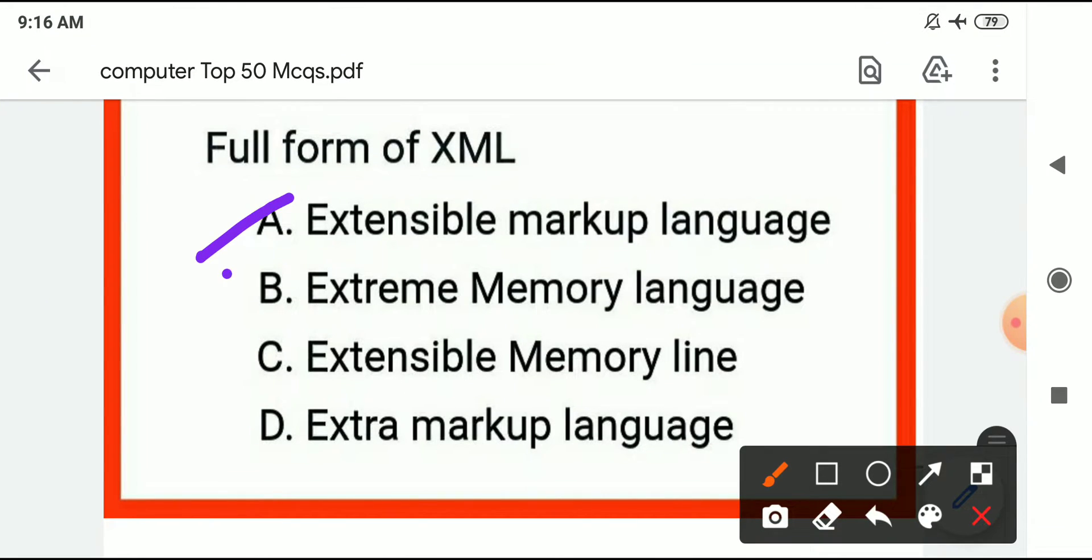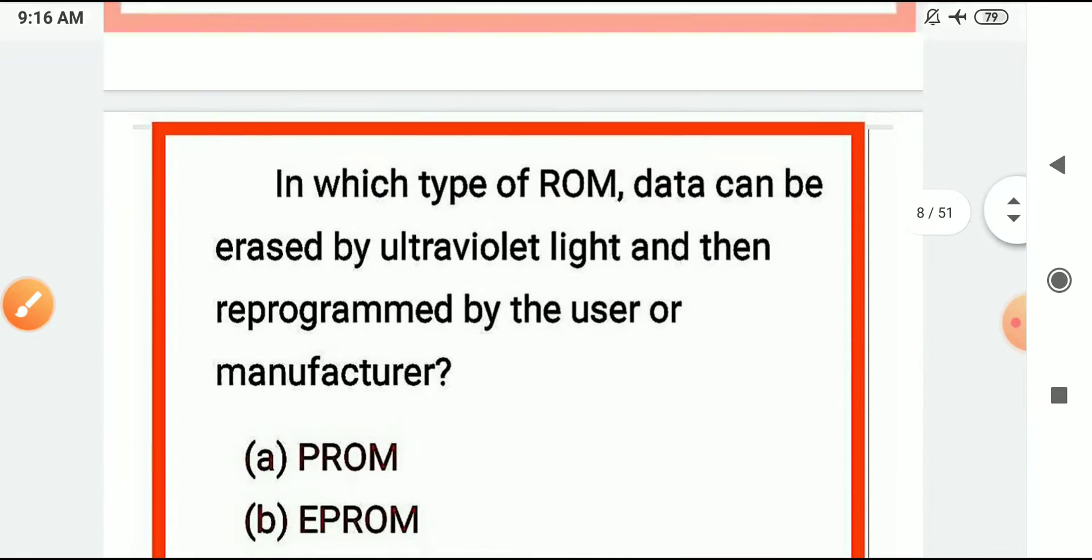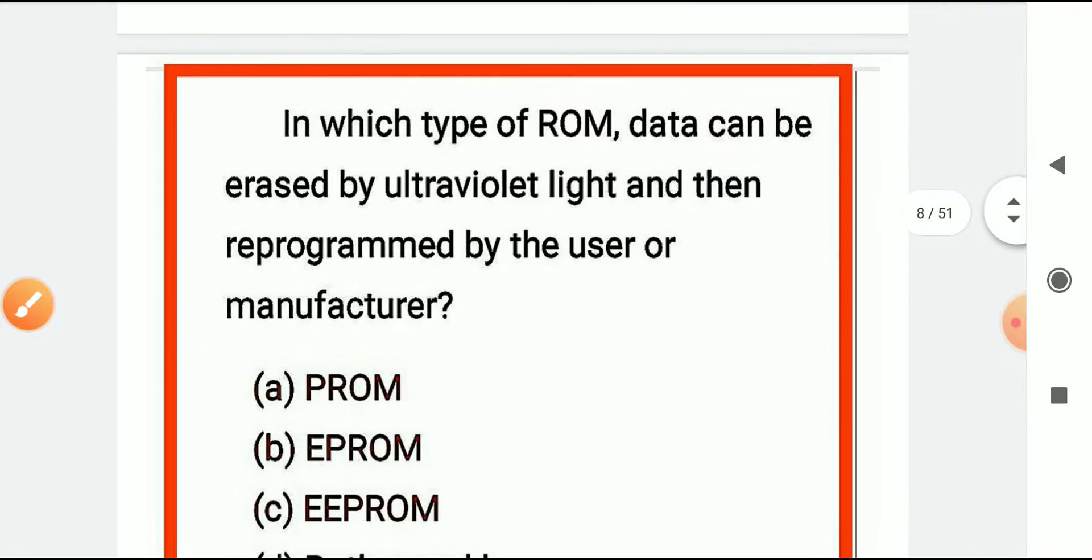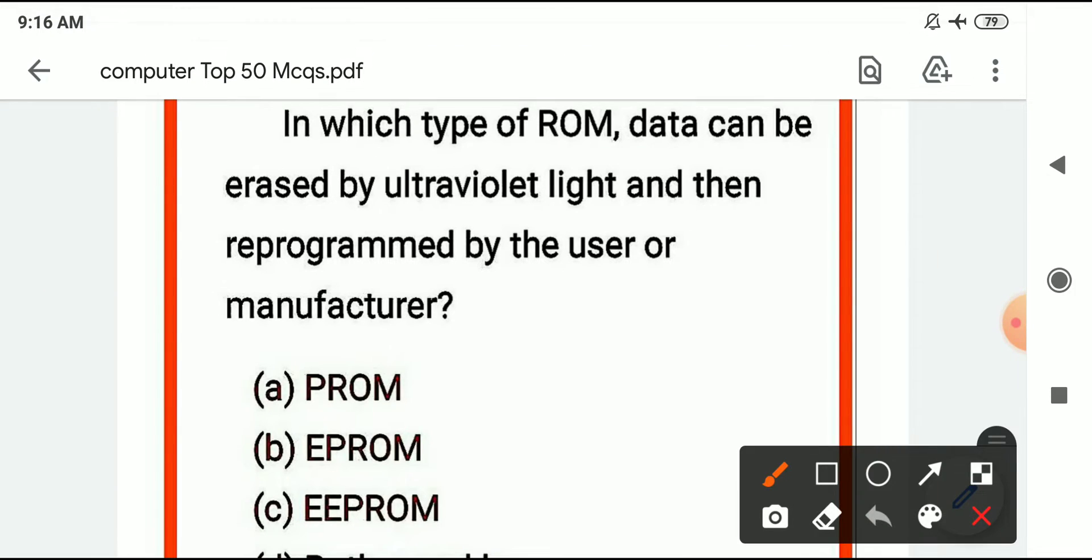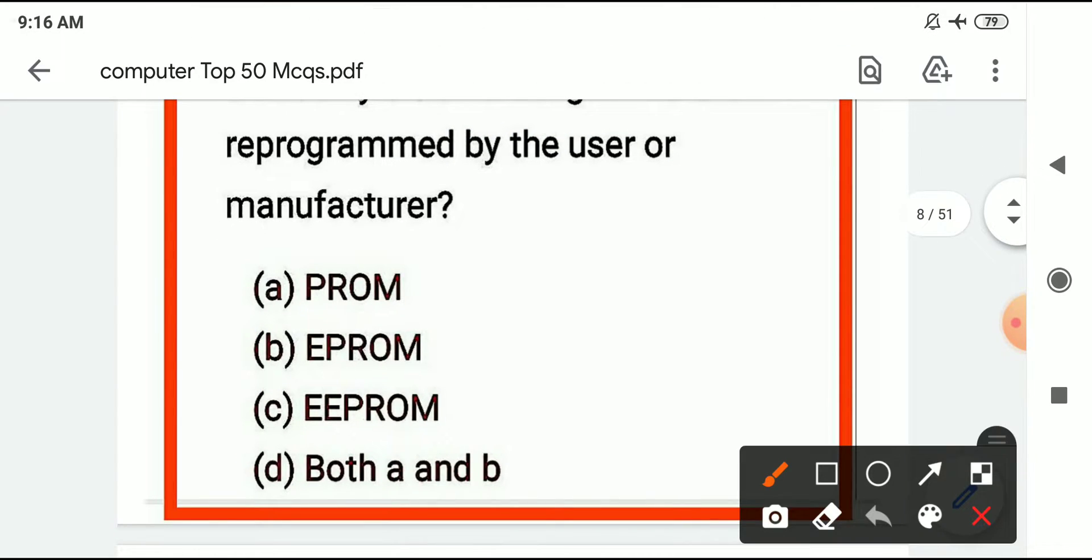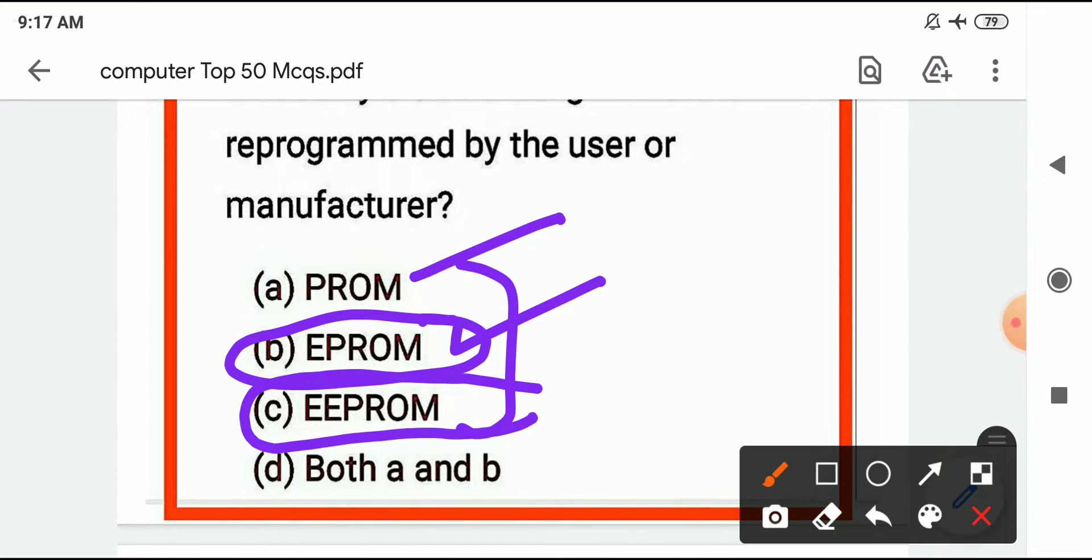Full form of XML: Extensible Markup Language. Next is in which type of ROM data can be erased by ultraviolet light and then programmed by users - that is EPROM. There are three types of ROM: PROM is not erasable, EPROM is erasable programmable read only memory, and EEPROM is electrically erasable.